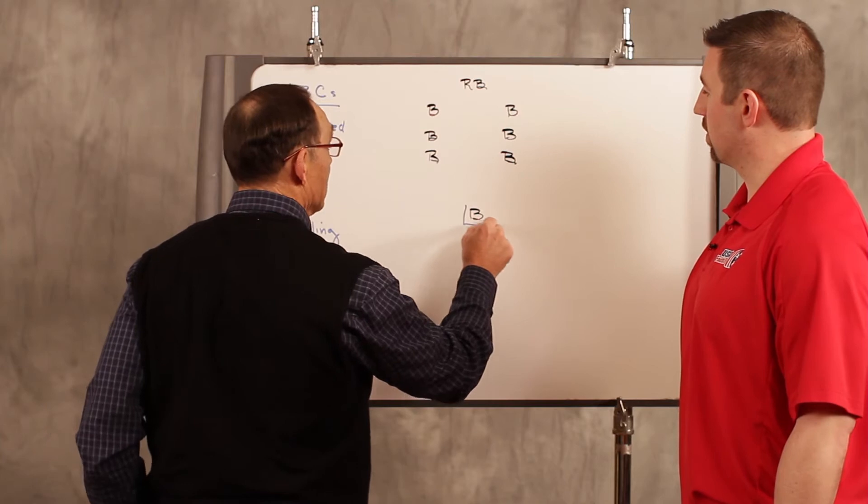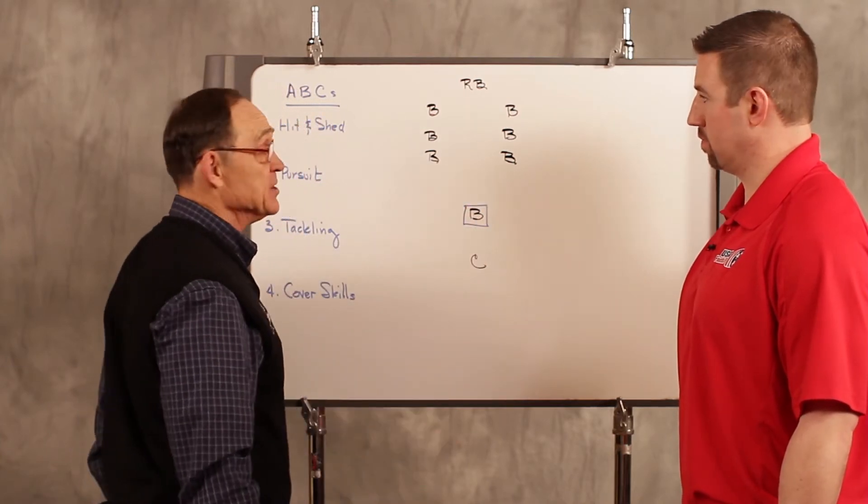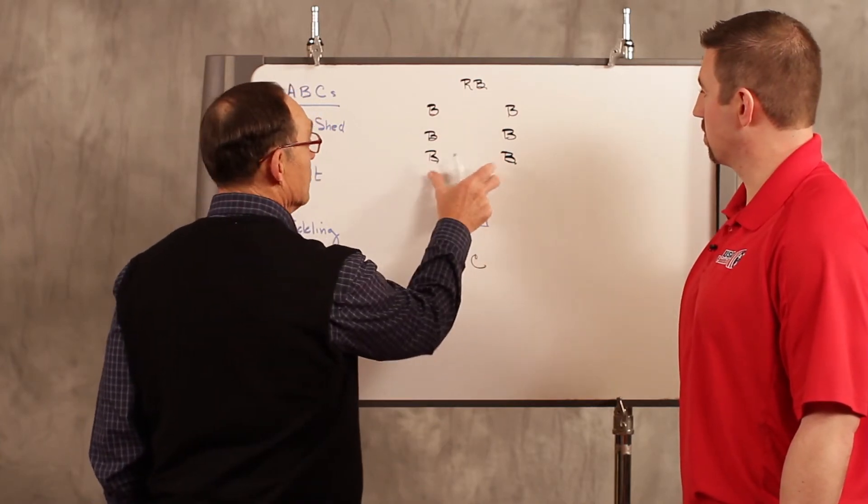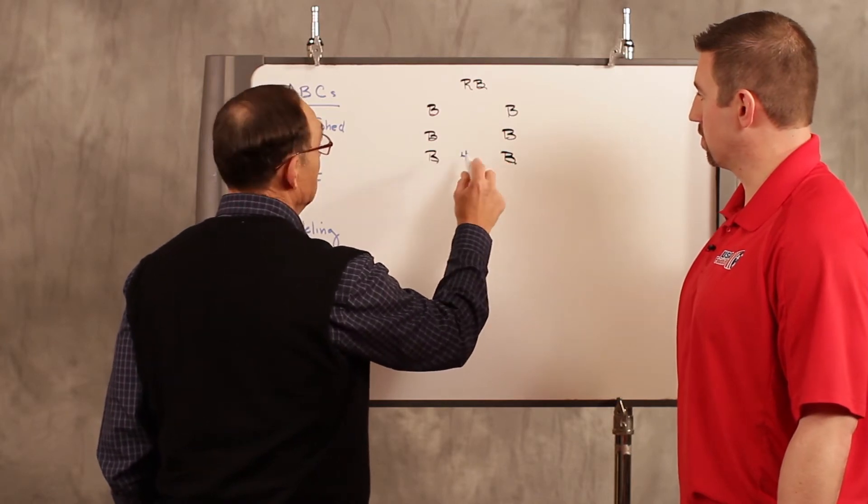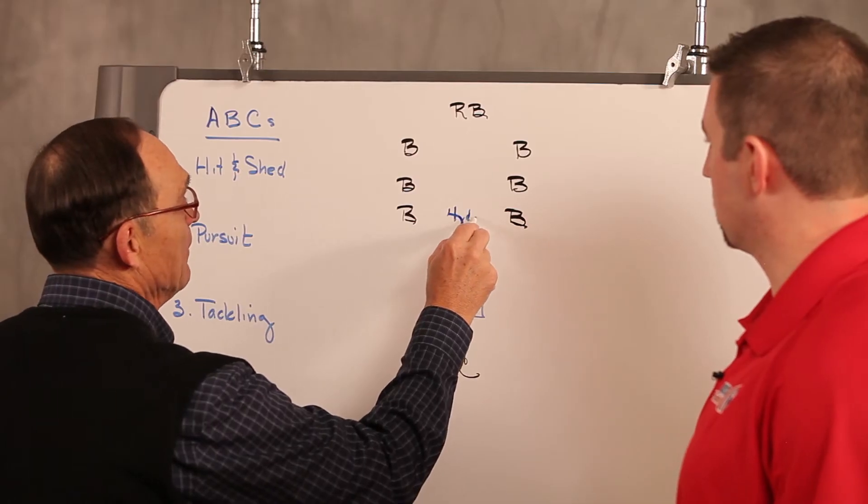and this will be the linebacker who's working on his base. The other linebackers will be in columns, we call it column hit and shed, and usually they're about four yards apart.